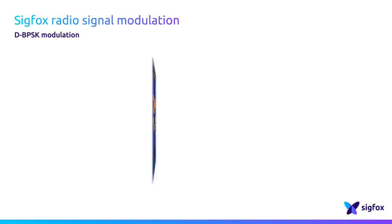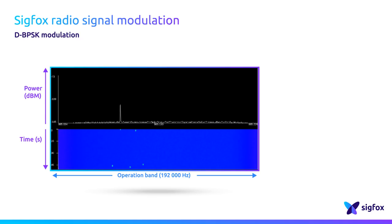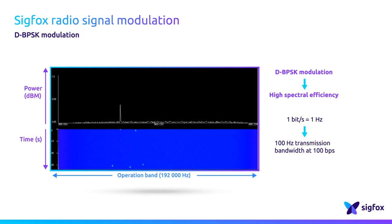SICKFOX uses DBPSK modulation for uplink transmissions of radio messages. The bitrate depends on the operation region, either 100 BPS or 600 BPS. DBPSK modulation enables taking only 1 Hz of the operation band to transmit at 1 bit per second. So if we consider a transmission at 100 BPS, it means that one single signal takes just a thin part of 100 Hz of the operation band.